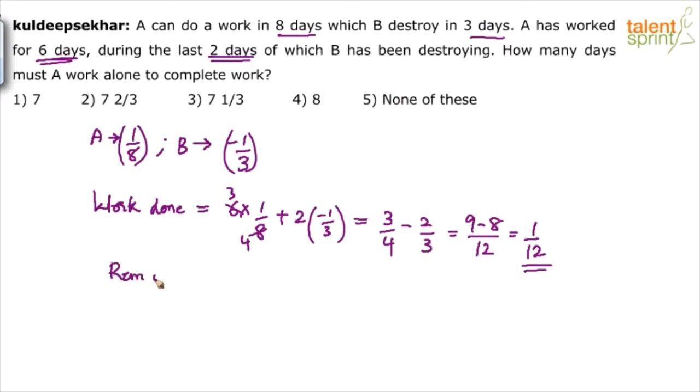So what is the remaining work? Remaining work is 11 by 12. Now this remaining work has to be done by A. A has to do 11 by 12 of the work. You know that A can do the total work in 8 days. So you will do 11 by 12 of the work in 11 by 12 into 8 days.